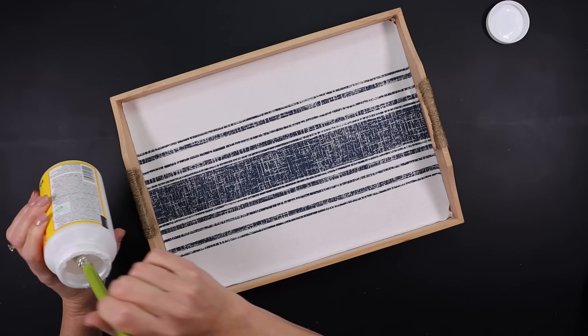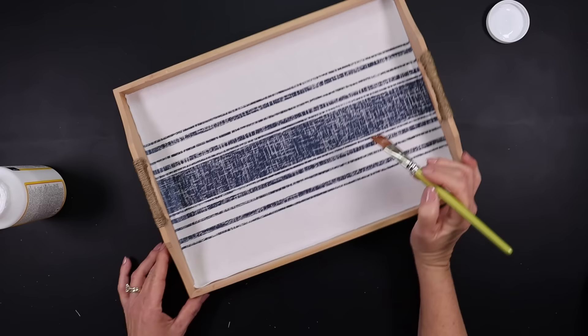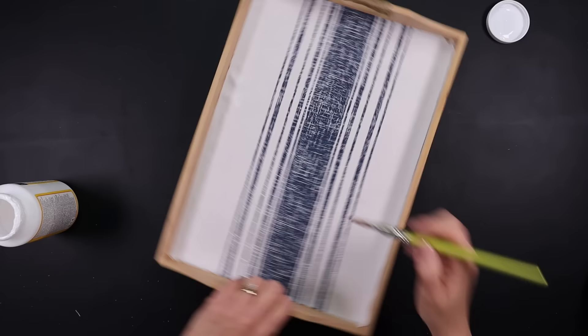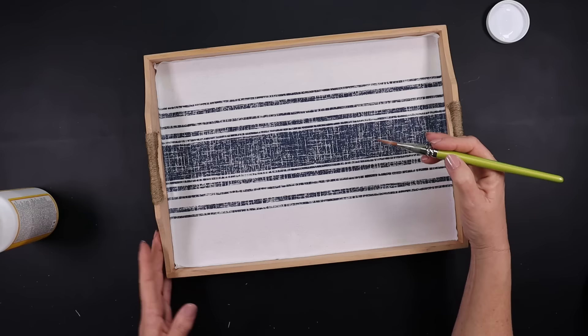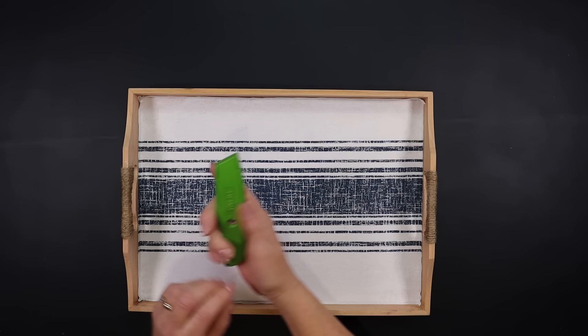Once it has cooled down, take Mod Podge and go over the inside edges only, saturate them, and don't worry if you get any wrinkles. We'll work that out later, but you definitely want to make sure that this Mod Podge has dried before we go to our next step.